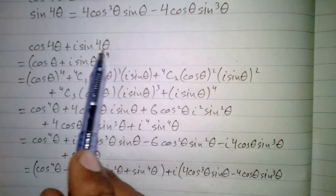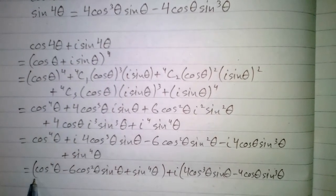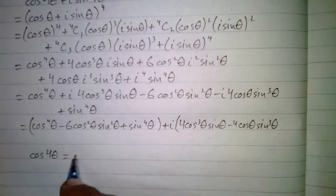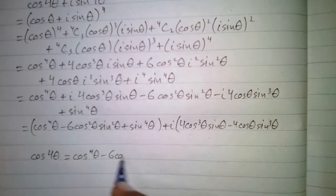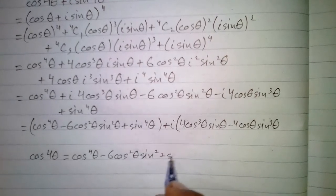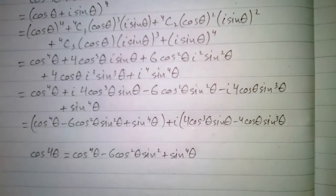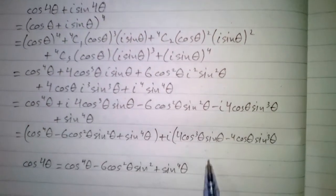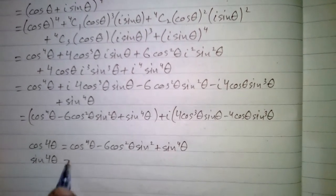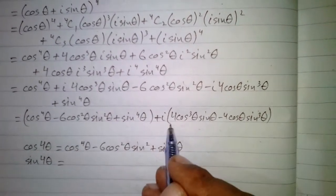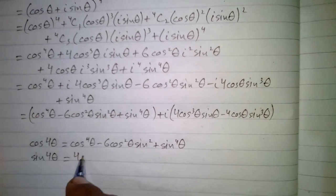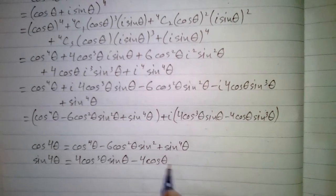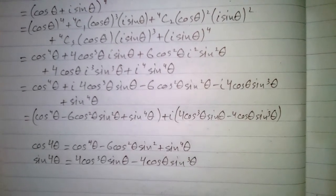Now we can compare real and imaginary parts. The real part of cos4θ + iota·sin4θ is cos4θ, so cos4θ equals cos⁴θ minus 6cos²θ·sin²θ plus sin⁴θ. Comparing the imaginary part, sin4θ equals 4cos³θ·sinθ minus 4cosθ·sin³θ.